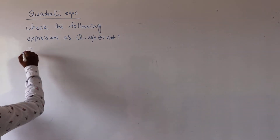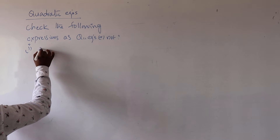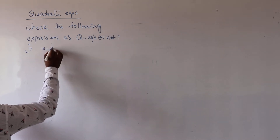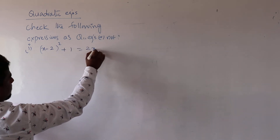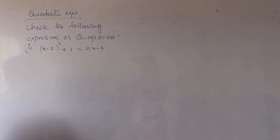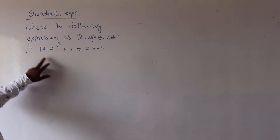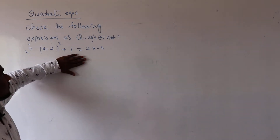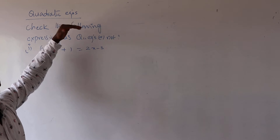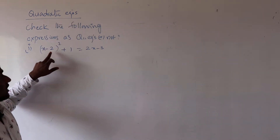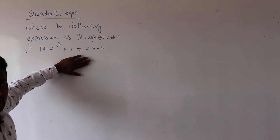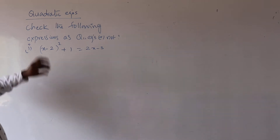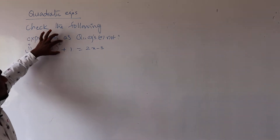The first question is: (x minus 2) whole square plus 1 equal to 2x minus 3. We have to check if it is a quadratic equation or not. They have given an expression that is not yet in the general quadratic form.